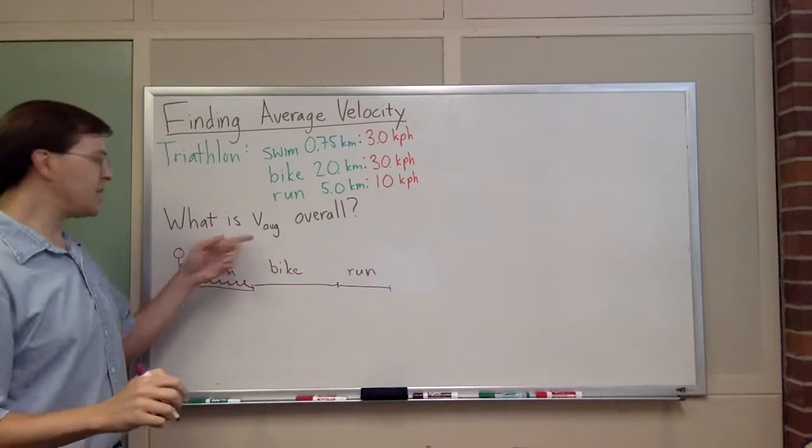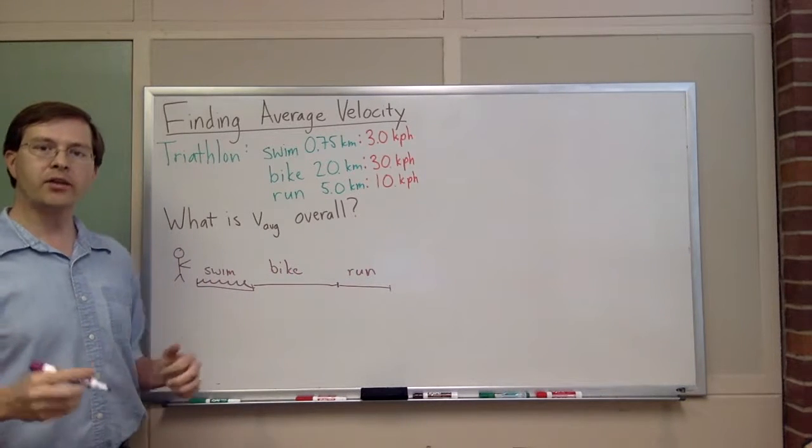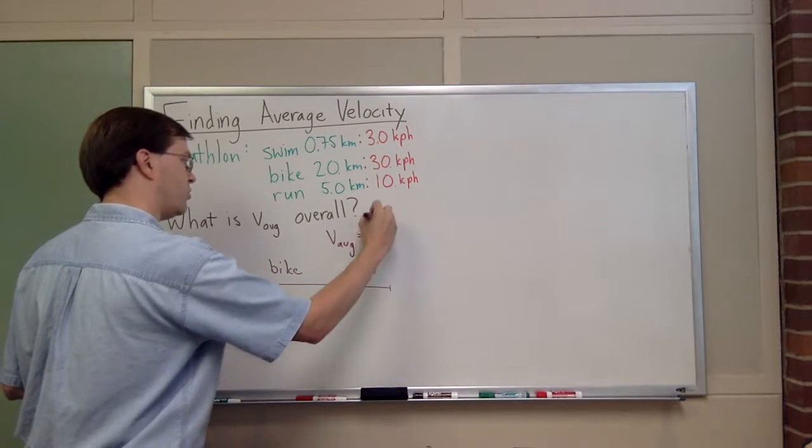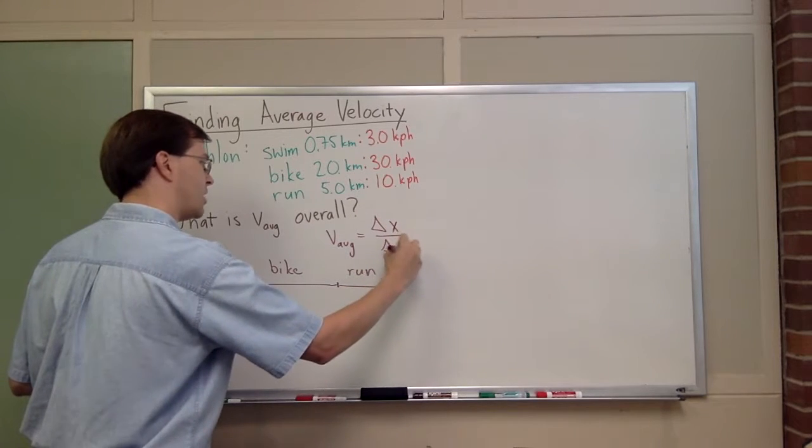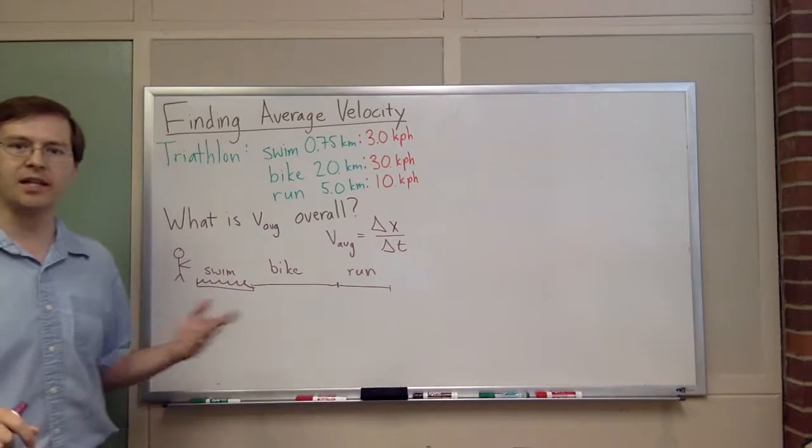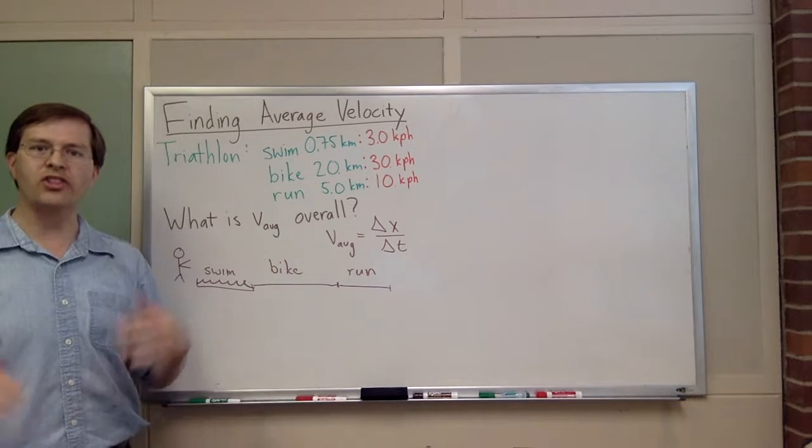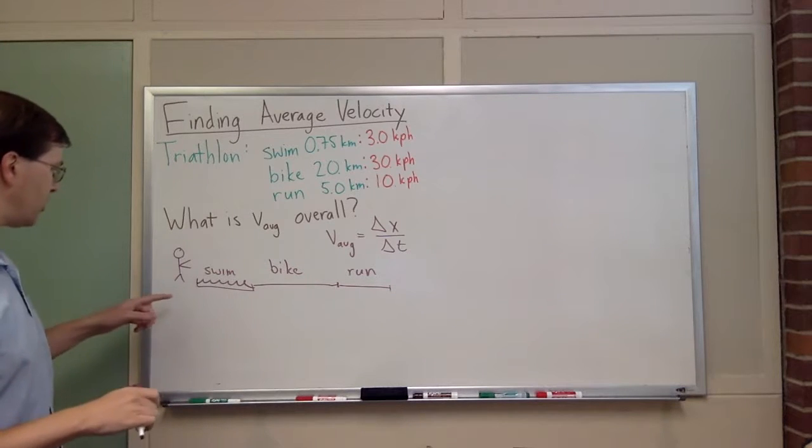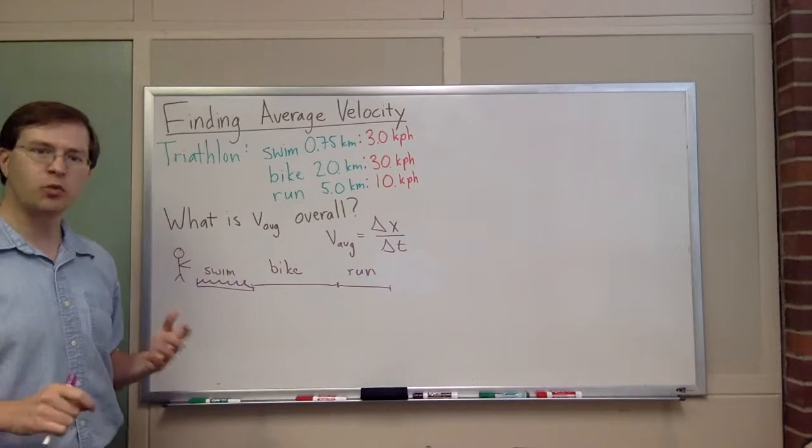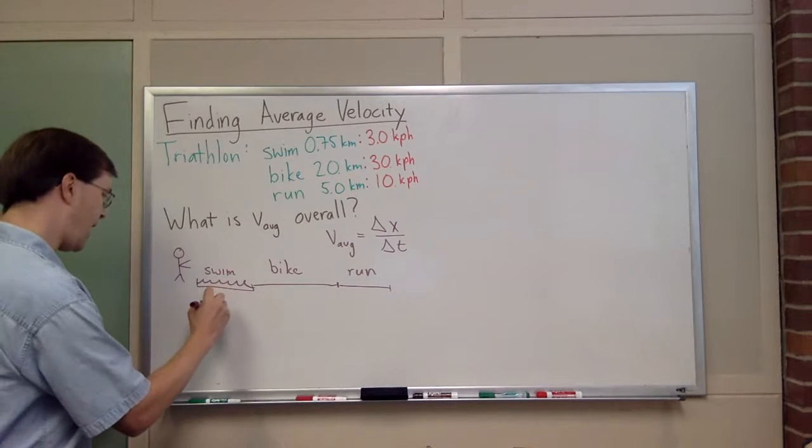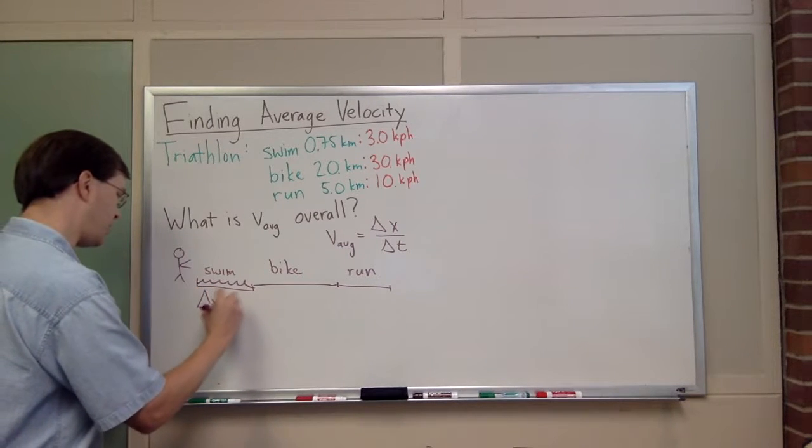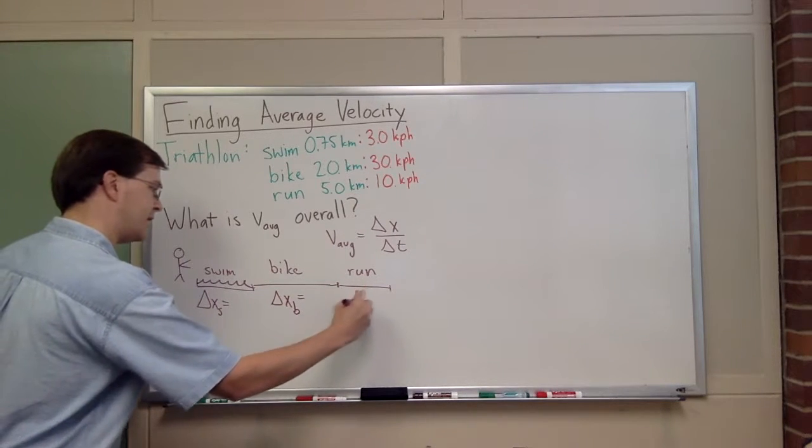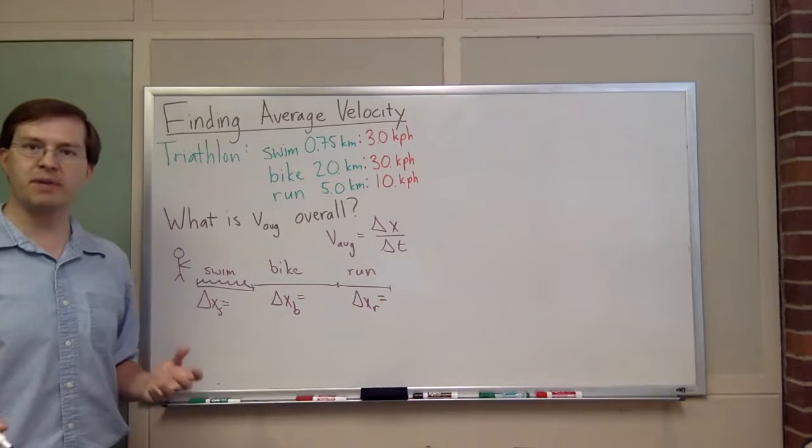What we want to do is find the average velocity overall. I know the definition of average velocity: v average equals change in position divided by change in time, delta x over delta t. Delta x and delta t here are the total change in position and time for the whole trip. We're going to need to add up delta x for each piece. I have a delta x swim, delta x bike, and delta x run.